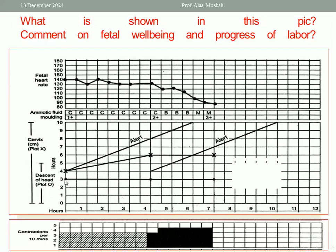What about head descent? At the start, three-fifths of the head was palpable abdominally. After four hours, remaining the same — three-fifths of the head palpable abdominally — so the head is not yet engaged. After another three hours — seven hours from the active stage — the head remained the same. Three-fifths of the head is palpable abdominally, so it is not engaged and there is no head descent. As you see, this is a straight line. We call it arrest of head descent, so there is a problem.